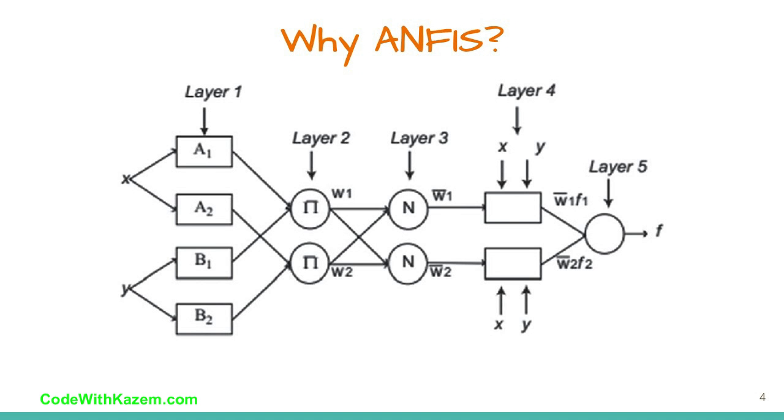Why do we need to use ANFIS? The basic structure of Mamdani fuzzy inference system is a model that maps input characteristics to input membership functions, then input membership functions to rules, then rules to a set of output characteristics, then output characteristics to output membership functions, and the output membership functions to a single valued output or a decision associated with the output.